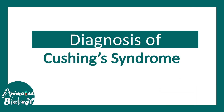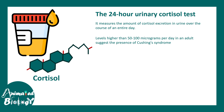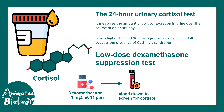For diagnosis of Cushing's syndrome in the clinic, there are two main tests. First is the 24-hour urinary cortisol test, which measures cortisol excretion in urine over 24 hours; levels higher than 50 to 100 micrograms per day in an adult suggest hypercortisolemia indicating Cushing syndrome. The second test is the low-dose dexamethasone suppression test — dexamethasone is given to the patient, and blood cortisol is measured; low cortisol is normal, while high cortisol indicates Cushing syndrome. This test will be discussed in detail in a separate video.